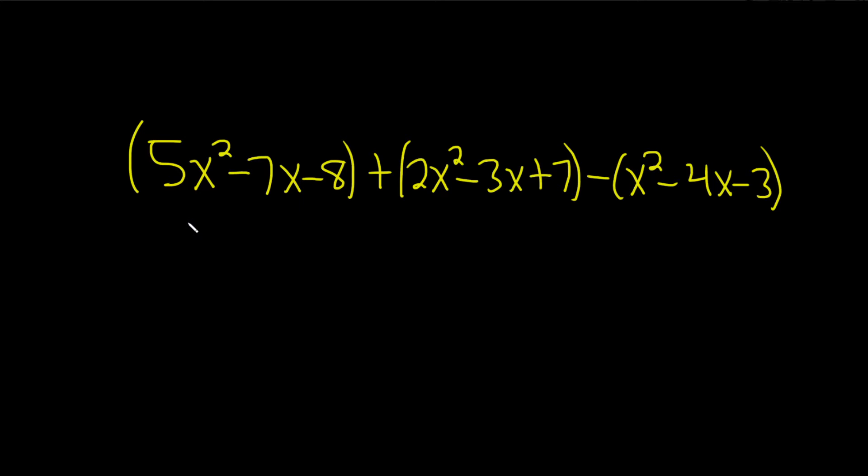Let's go ahead and clean this up. This one doesn't have a negative in front of it so we can just drop the parentheses: 5x squared minus 7x minus 8. That's because there's really a 1 here and when you take 1 and multiply it by this you just get that.